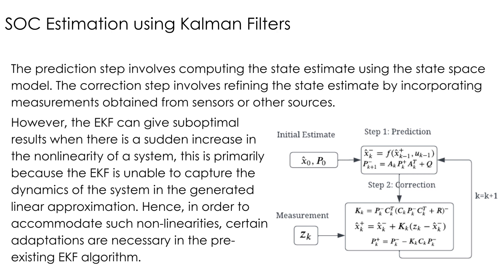The Kalman filter has a problem: it assumes that the system we are working on is a linear system. Unfortunately, since the battery is a non-linear system, the Kalman filter cannot be directly used. Hence comes the need for an extended Kalman filter. In an extended Kalman filter, or EKF, the algorithm consists of an extra step in which the system is linearized about the point of concern. But when the non-linearity in a system increases, the linear approximation does not work, and hence the EKF can give a sub-optimal result. In order to accommodate these non-linearities, certain adaptations need to be made to the EKF algorithm to give a better result.